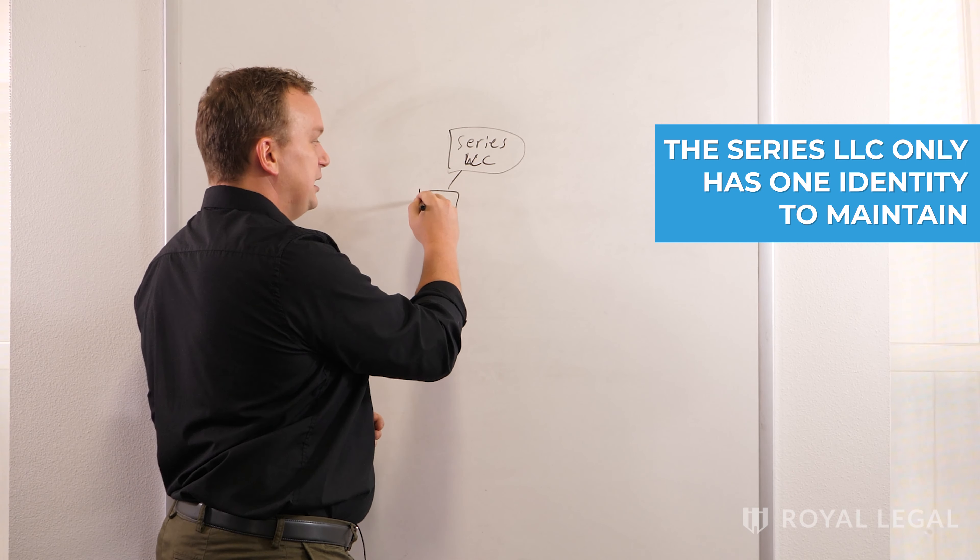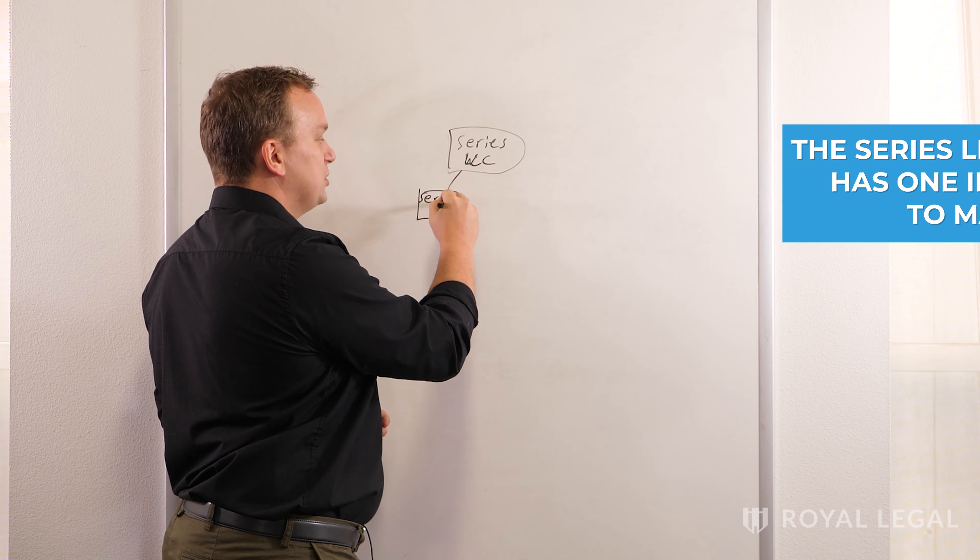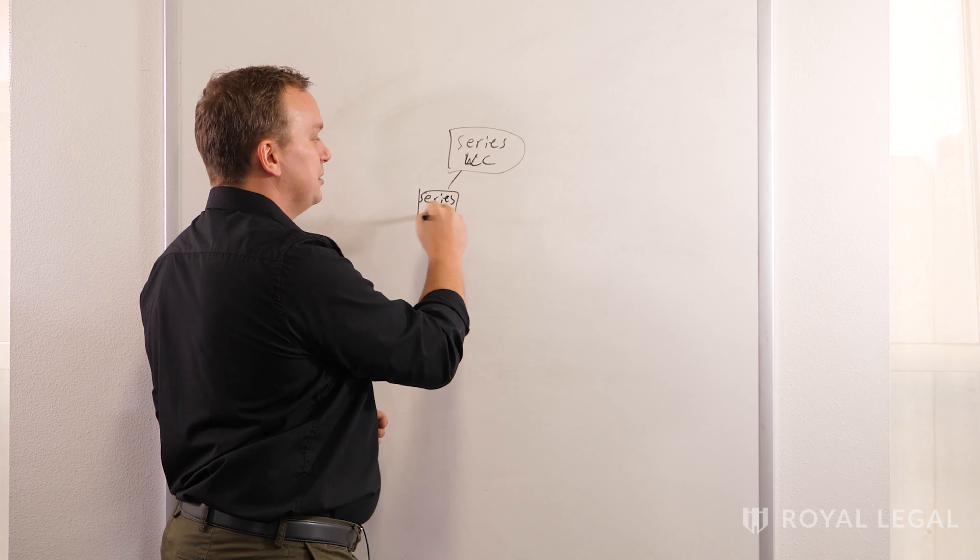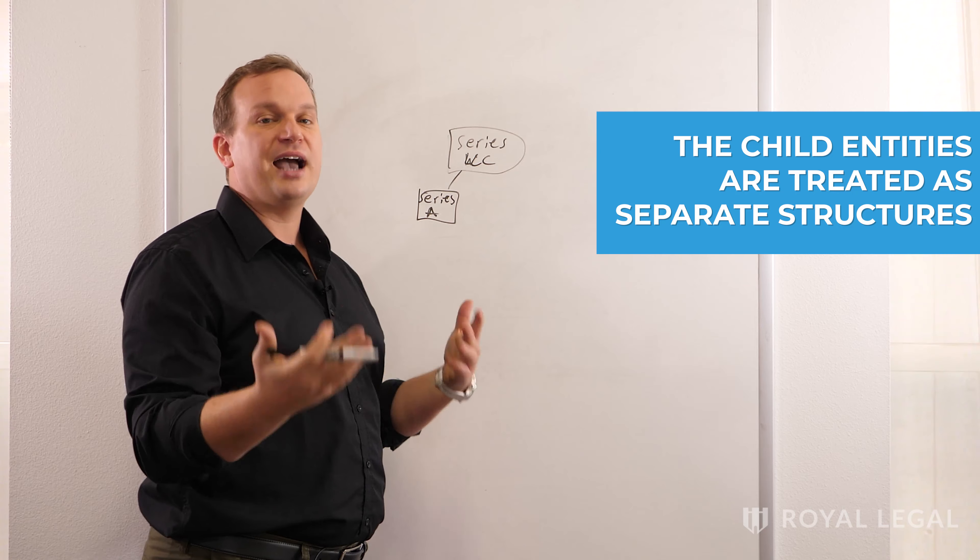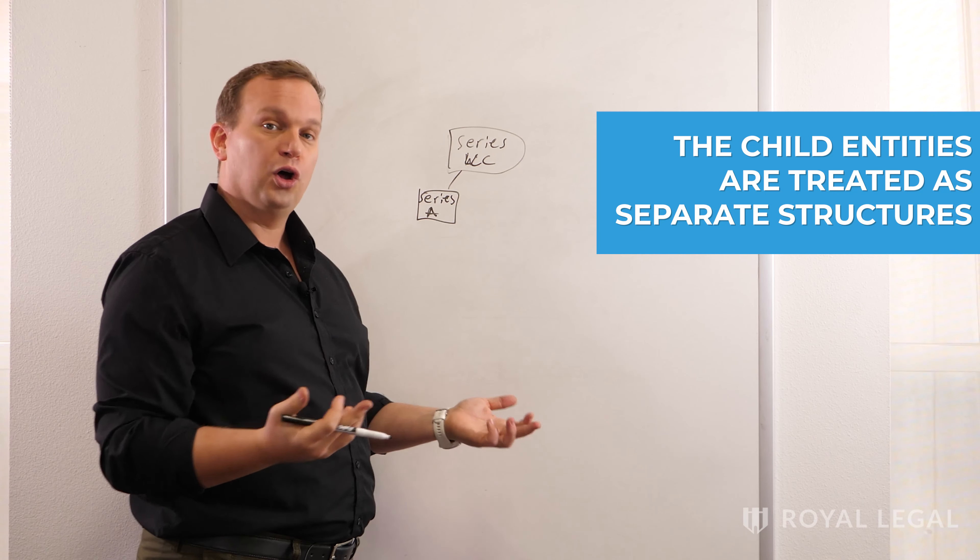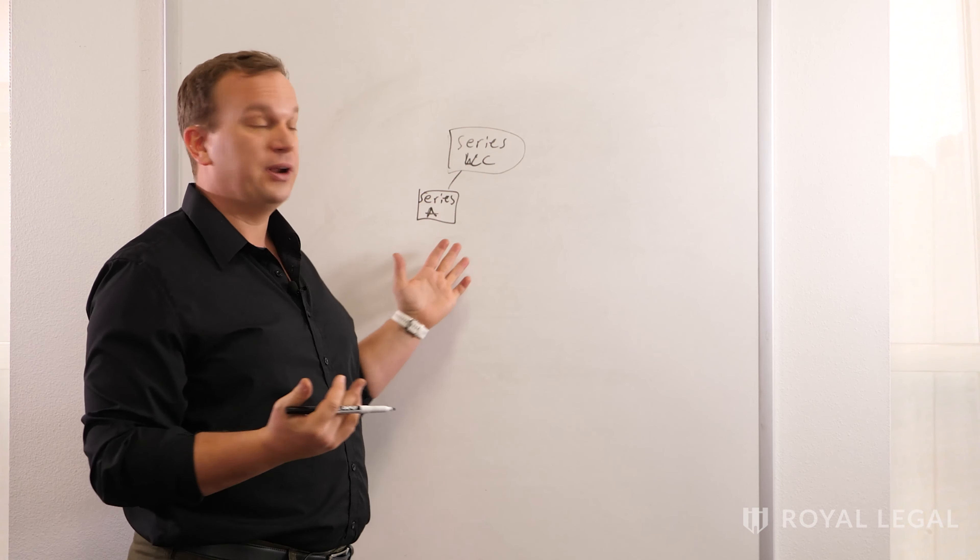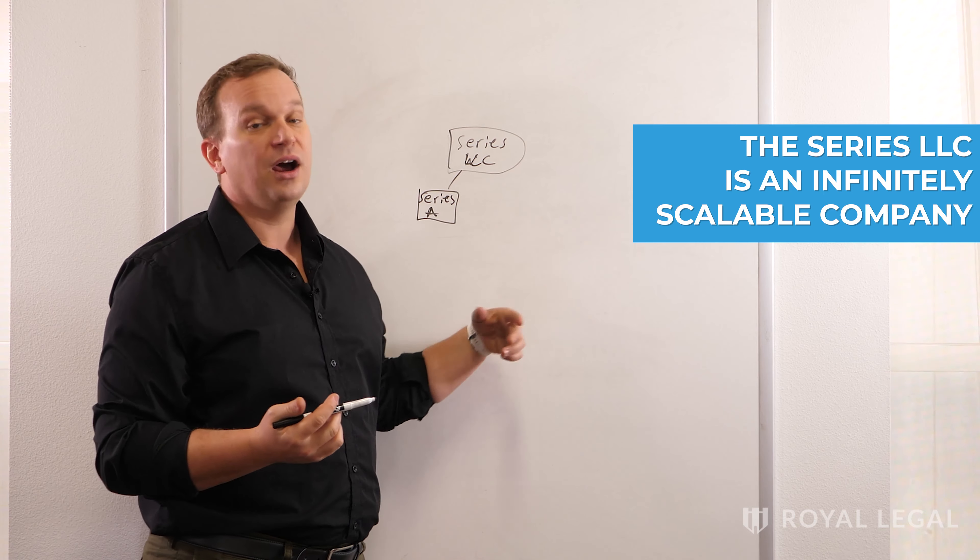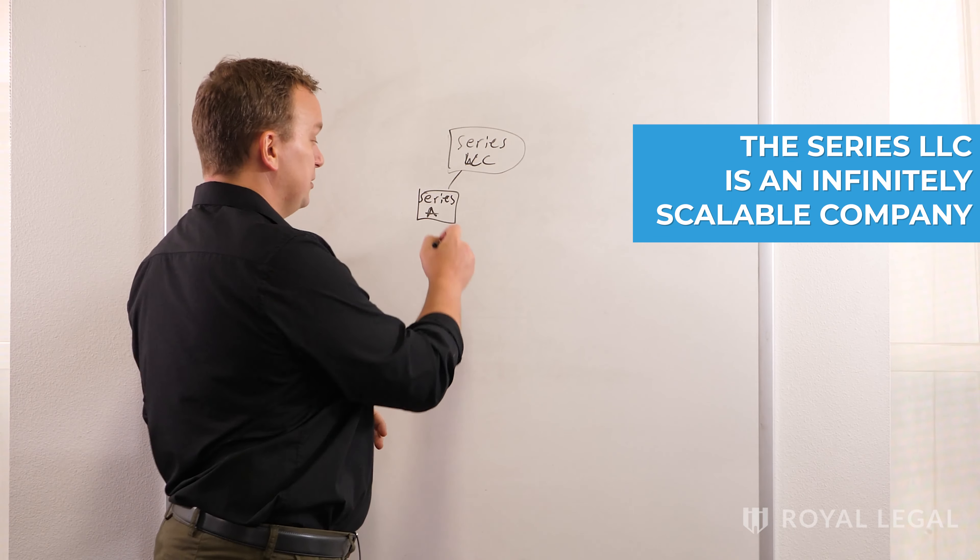What's special about the series LLC is that it's able to create what's called a child series. You could create child series A for free. It acts like its own entity for all of your liability purposes, and they're free to create, and it can create an infinite number of these child series underneath the parent. That's what makes it special.